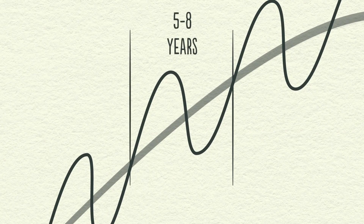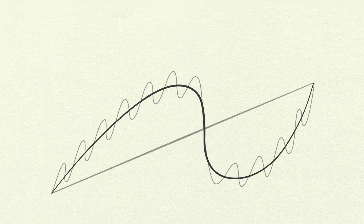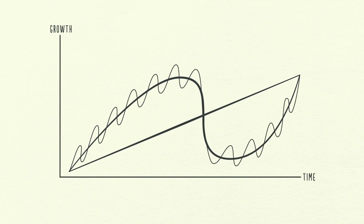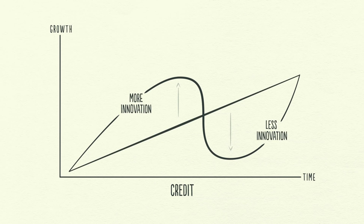Debt swings occur in two big cycles. One takes about five to eight years, and the other takes about 75 to 100 years. While most people feel the swings, they typically don't see them as cycles because they see them too up close — day by day, week by week. In this chapter, we're going to step back and look at these three big forces and how they interact to make up our experiences. Swings around the line are not due to how much innovation or hard work there is — they're primarily due to how much credit there is.